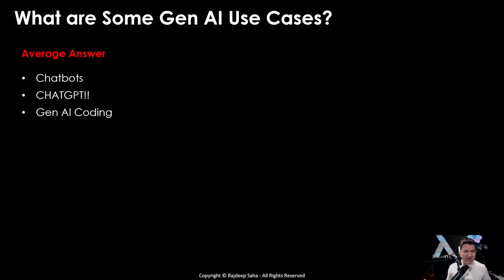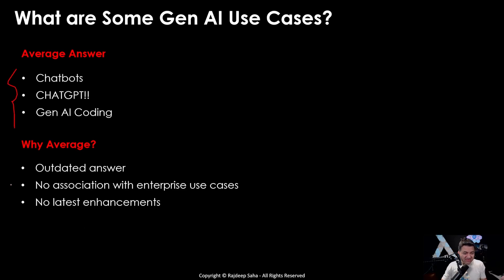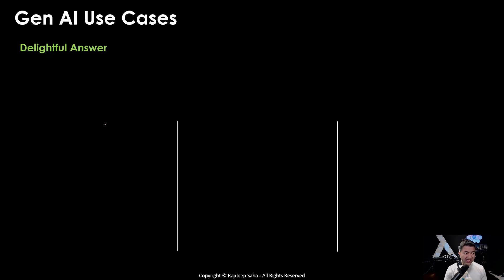One of the more popular questions these days is: what are some Gen AI use cases? The average answer is chatbots, ChatGPT, Gen AI coding. Why are these average? These are outdated answers — everyone knows chatbots, ChatGPT, Gen AI coding. They are very generic. The goal is not just to give a correct answer — we want to give delightful answers. To make the answer delightful, you have to associate use cases with enterprises or the domain you are working in, and include the latest enhancements.